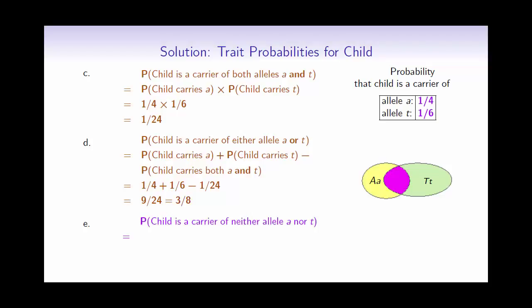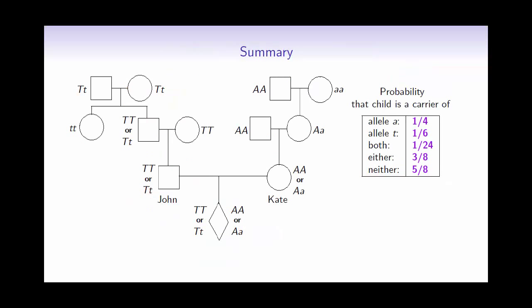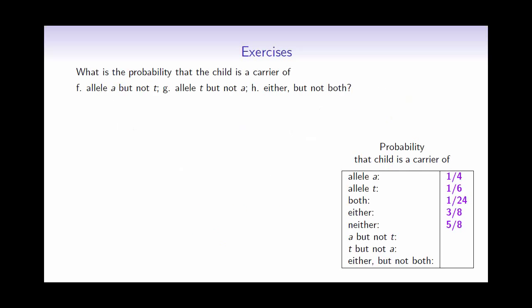For the final part, we want the probability that the child is a carrier of neither disease. This is exactly the complement of what we just computed: one minus three-eighths, which gives five over eight. Here's a summary of all the results — you can pause the video to review them. You can also try one of the exercises; please pause before looking at the solutions. Good luck!